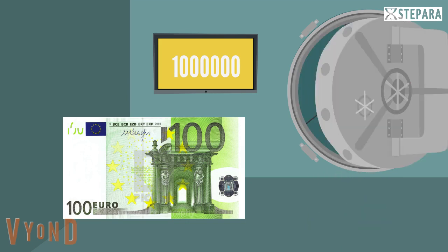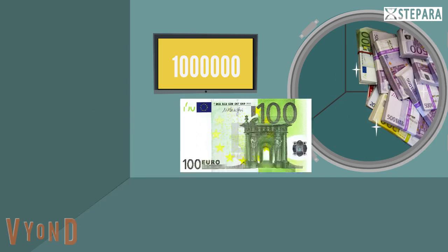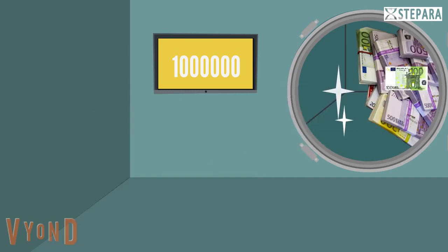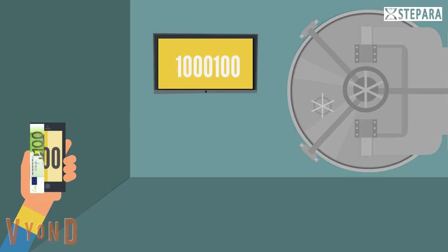When money is deposited to the bank, it is recorded to the account, and then the person can use the money over the system. After being deposited, the physical money becomes the deposit money.